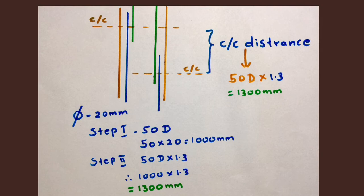I'll give an example. I'm using 20mm diameter of steel bar. Step 1: we will find the lapping length. 50D, 50 into 20, so 1000mm is lapping length. Step 2: find out center to center, so 50D into 1.3, so 1300mm is the center to center distance.